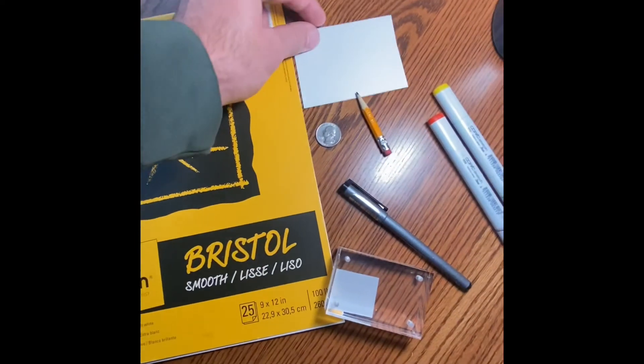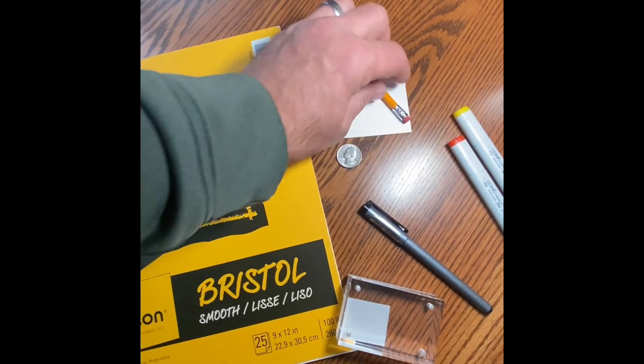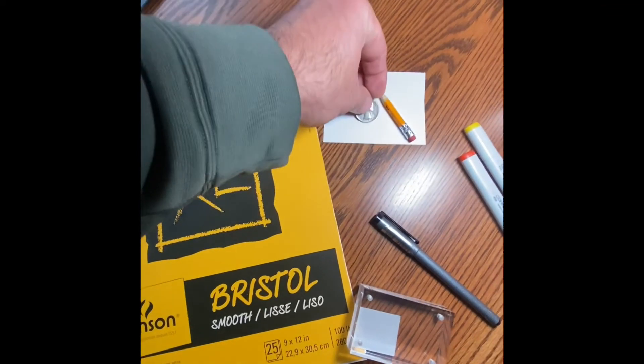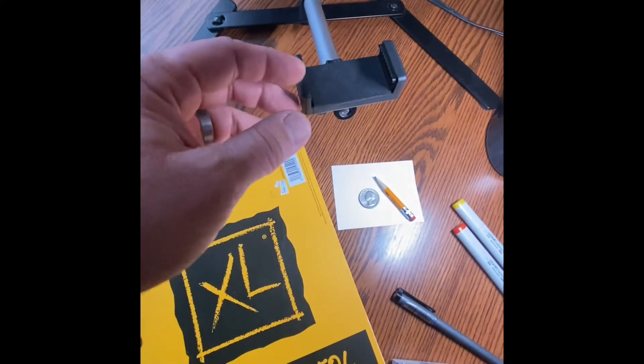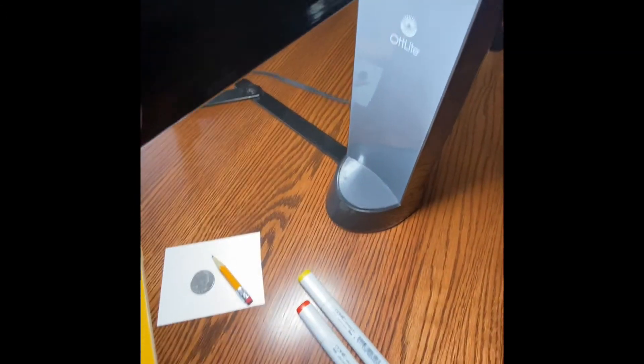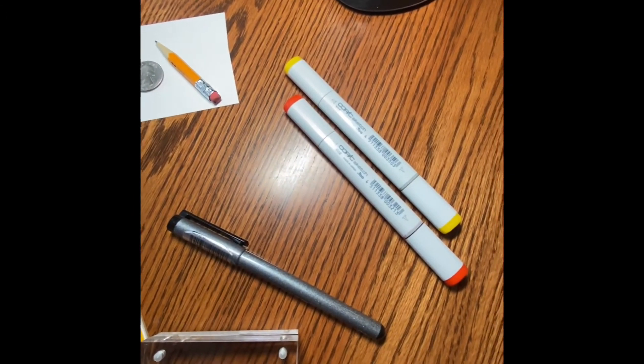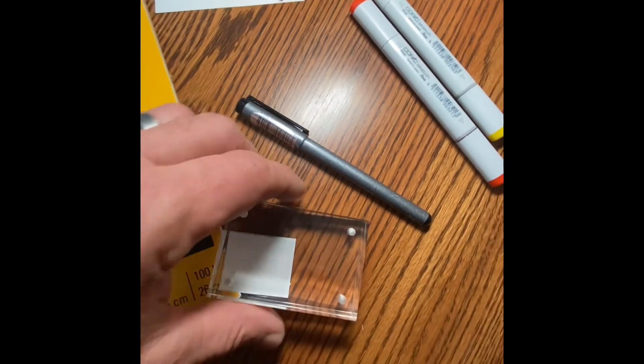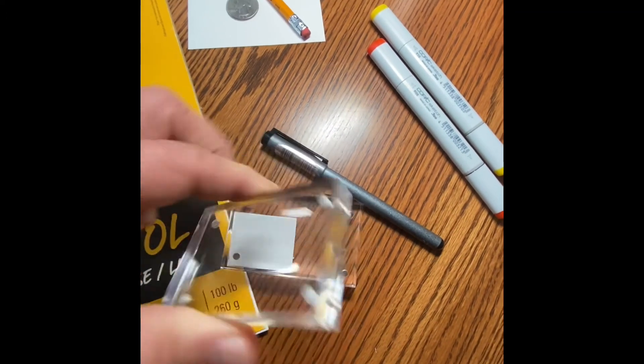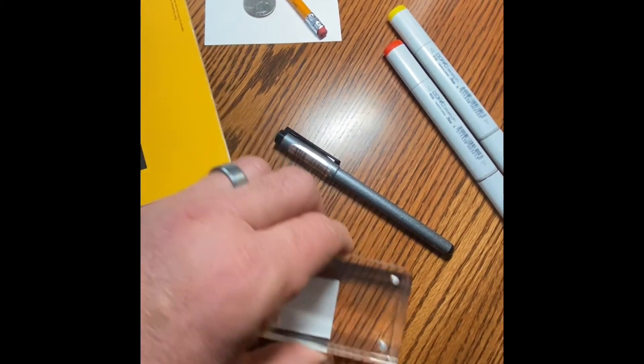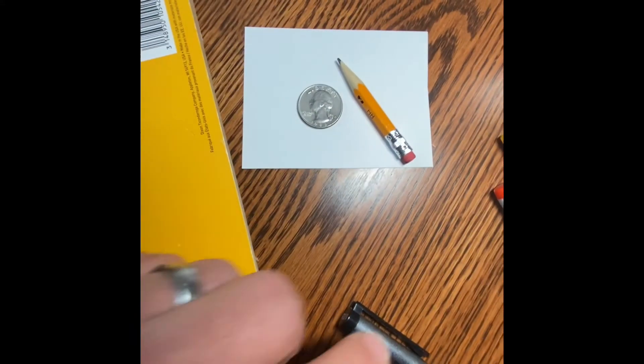There's my Canson XL smooth Bristol hundred weight acid-free paper, there's the pencil and the quarter. You see there's the camera holder and there's my light that I use for a nice clear clean light. Those are my Copic sketch markers, there's my Copic multiliner, and this is the little case that I put a lot of my drawings in.